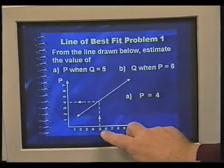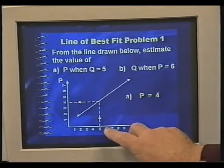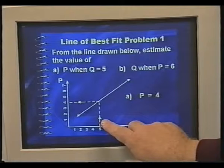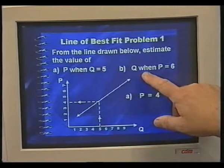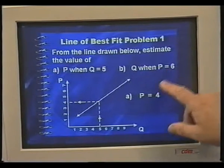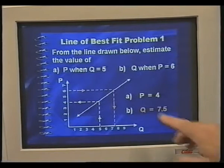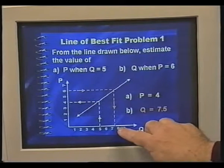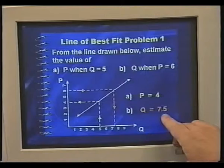I find from that if q is equal to 5, then p is equal to 4. I put arrows on the line to indicate what direction I'm making my estimation. In this case I want to know what q is when the p value equals 6. So I would start with 6, then go across horizontally, and I find from the line that I can estimate the q value to be between 7 and 8 — about 7.5.